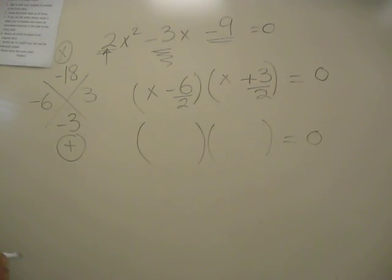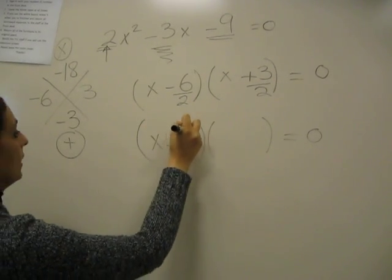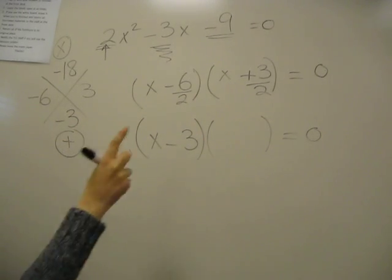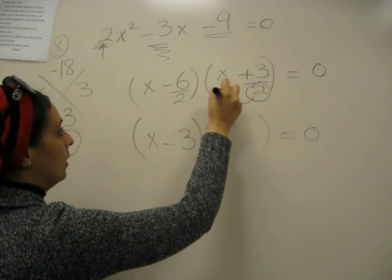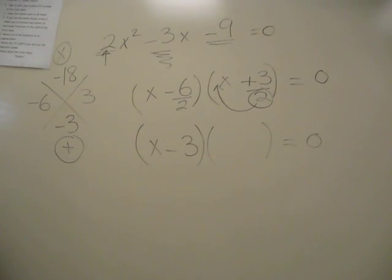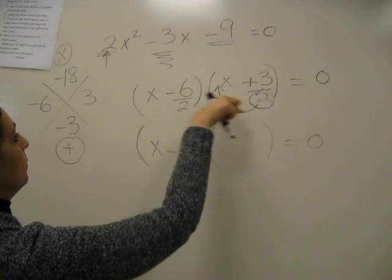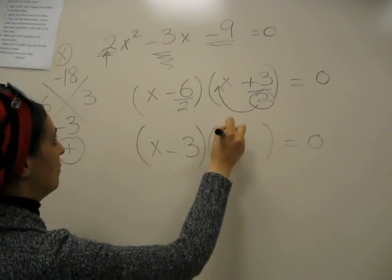So negative 6 divided by 2 is negative 3. This one is not reducible. So in this case, we'll take the bottom, make it a coefficient. Take the bottom, put it up before X as a coefficient.